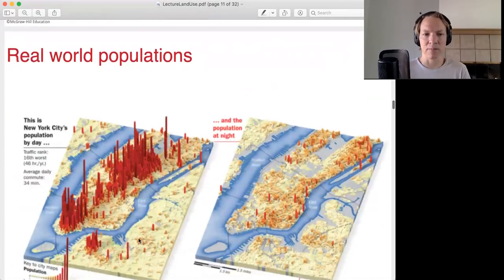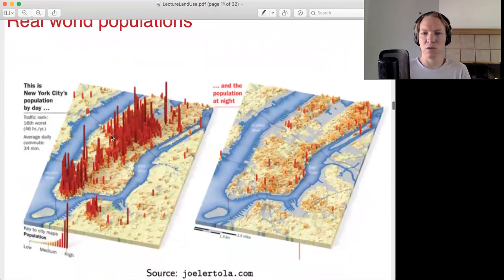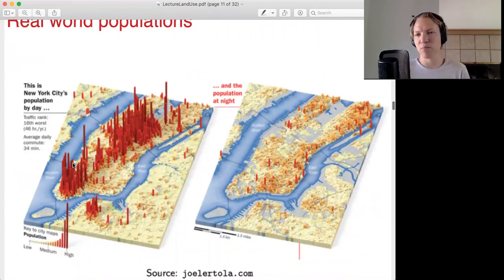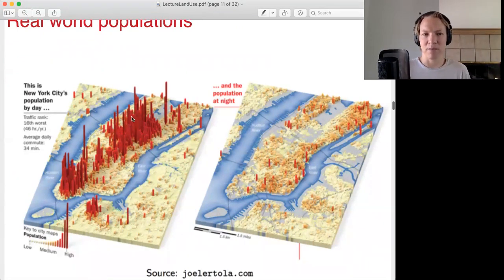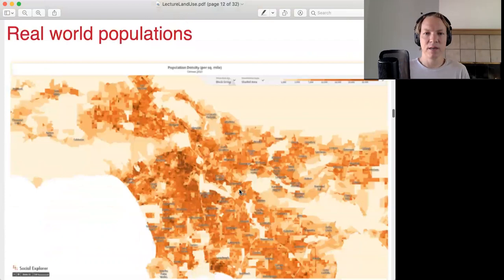This is just a fun example that shows you New York City population. There really is this commuting into the central business district where this is the population during the day pre-pandemic. And then this is the population at night. So you can see that people basically are working here and then they are commuting out back to the houses at night. Many of them are living in this area and these areas, as you can see, their population goes up at night.